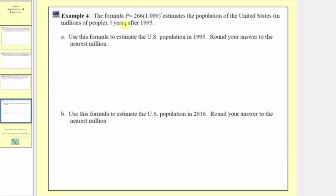Let's look at one last question. We're given the formula p equals 266 times 1.009 raised to the power of t, which estimates the population of the United States in millions of people t years after 1995. In part a, we're asked to use this formula to estimate the US population in 1995, rounded to the nearest million. We'll note that t equals the number of years after 1995, so for 1995, we substitute zero for t, since 1995 is zero years after 1995.